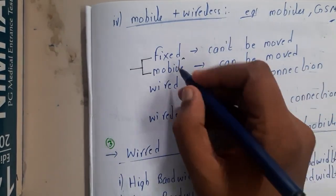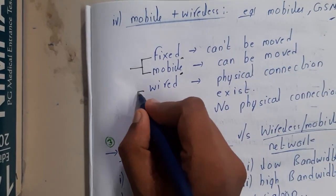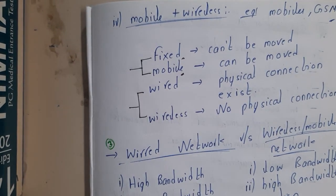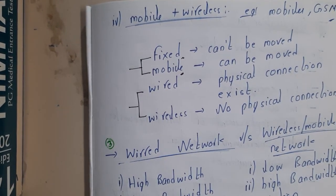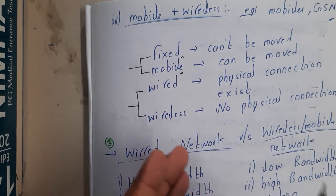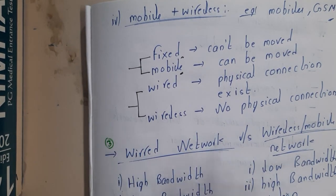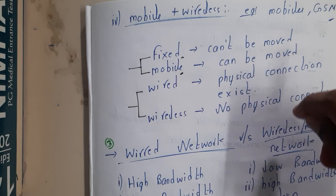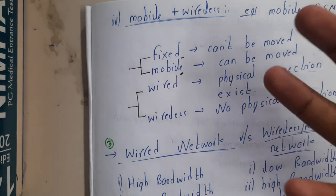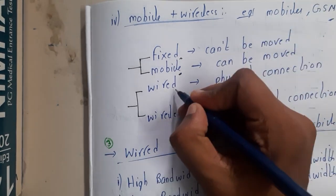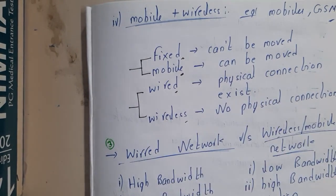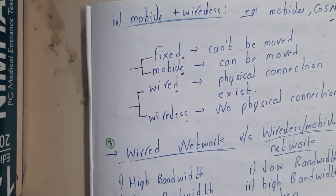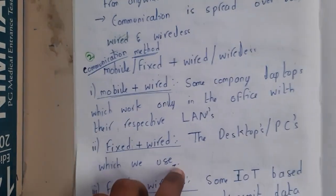Similarly, wired and wireless refer to how data is transmitted. Wired means having a specific wire for data transfer — for example, a LAN wire or ethernet port on your computer. Wireless is nothing but a Wi-Fi connection. This is just an introduction; now let us go through some combinations.